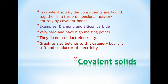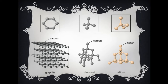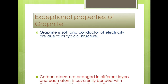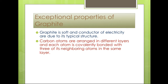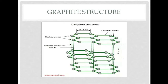But graphite is an exception. Graphite is soft and it is a conductor of electricity. The main reason is graphite's layer-by-layer structure. Carbon atoms are arranged in different layers, and each atom is covalently bonded with three of its neighboring atoms in the same layer. The fourth valence electron of each atom is free and present between different layers, allowing free movement — which makes graphite a good conductor.